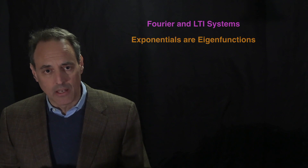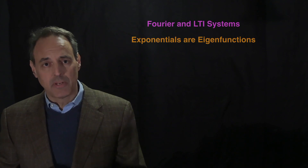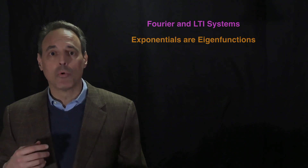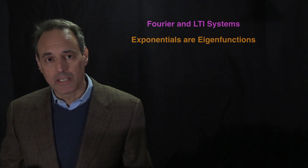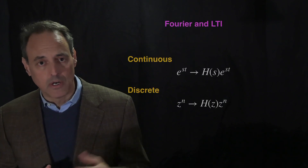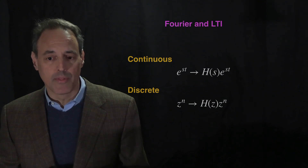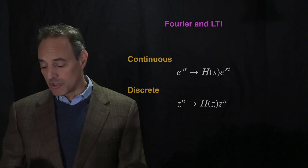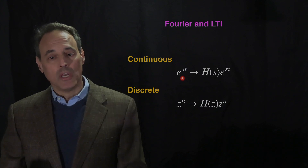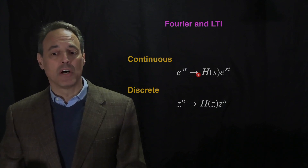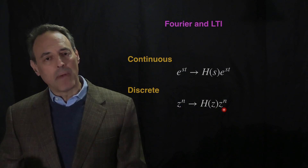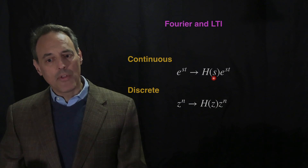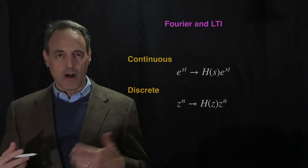Now we're going to constrain that a little bit. We're going to talk about these exponentials and make them purely imaginary, which is more in line with what we're thinking when we consider a Fourier decomposition — that they are purely complex exponentials. Remember that for continuous and discrete systems, if you come in with an exponential, what you get back is the exponential times some scaling factor. This is just some integral we evaluate that gives you a number. Same thing with the discrete case: Z^n comes in, you get back Z^n with some scaling factor. These are eigenfunctions.